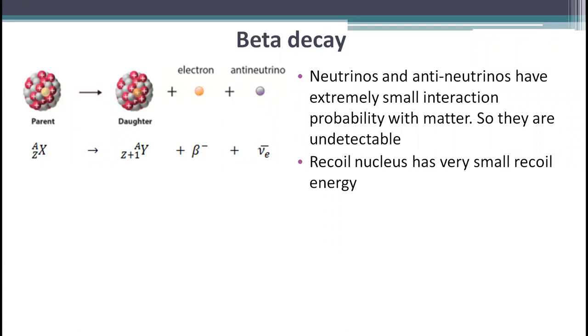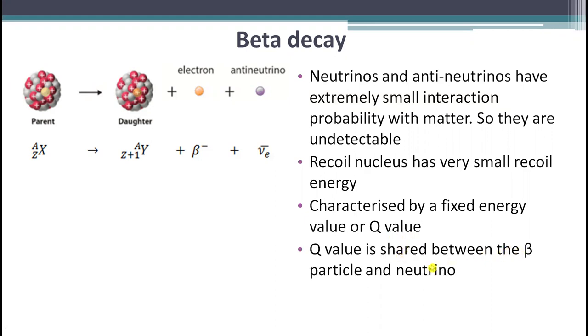Hence, the only significant ionizing radiation produced by beta decay is the fast electrons. Each specific beta decay transition is characterized by a fixed decay energy value or Q value. Because the energy of the recoil nucleus is virtually zero, this energy is shared between the beta particle and the neutrino. Therefore, the spectrum of beta decay electrons is continuous.